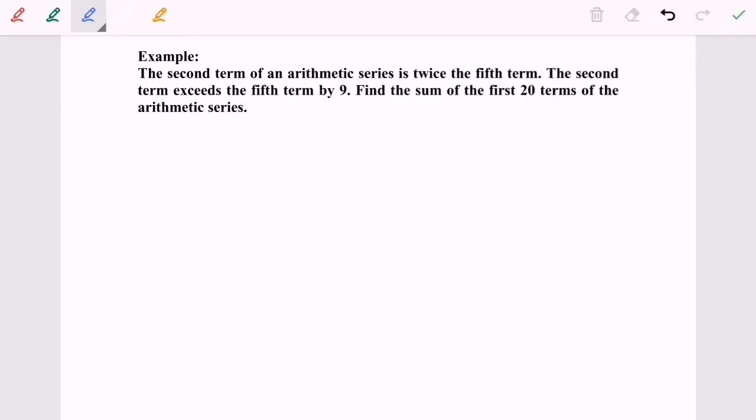Hello everyone, now I'm going to discuss an example for arithmetic series. The second term of an arithmetic series is twice the fifth term, so we have T2 equals twice T5.